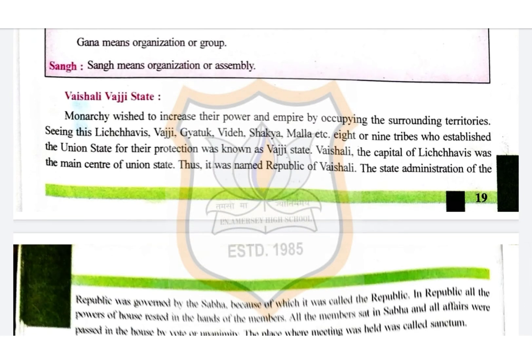In the case of Vaishali, the Vajji state monarchy wished to increase their power and empire by occupying surrounding territories. Seeing this, the Lichchhavis, Vajjis, Jnatrikas, Videhas, Satyamallas, and other eight or nine tribes established a union state for their protection, which was known as the Vajji state.